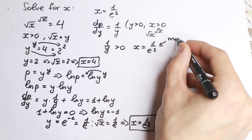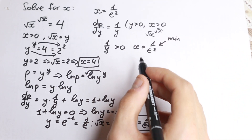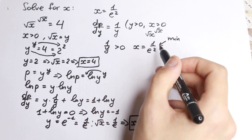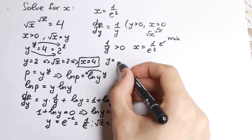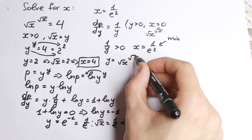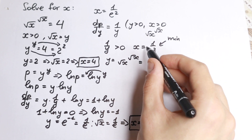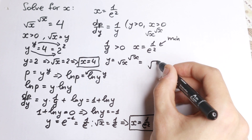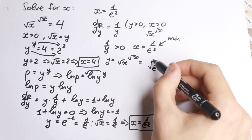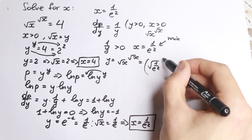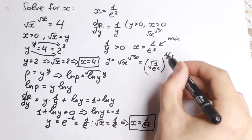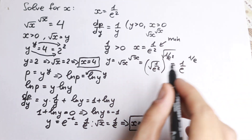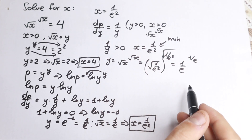Let's find the value of the function at that minimum point. We evaluate square root of x to the power square root of x at x equals 1 over e squared: square root of (1/e²) to the power square root of (1/e²) equals (1/e) to the power (1/e). This is our minimum value.